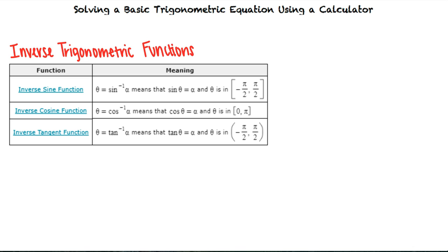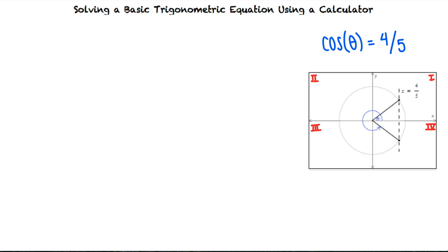Let's say we're given the equation cosine theta equals 4 fifths, and we want to find all solutions in the interval 0 to 2 pi. First, we note that cosine theta is positive for theta in quadrants 1 and 4. This means that there are exactly two angles between 0 to 2 pi that satisfy cosine theta equals 4 fifths.